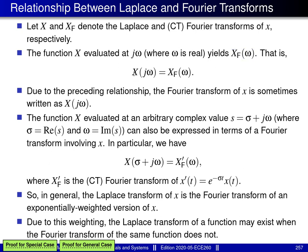Essentially, this relationship says that evaluating the Laplace transform on the imaginary axis yields the Fourier transform. Due to this relationship, the Fourier transform of x is sometimes written as X(jω).